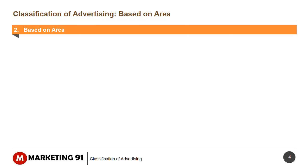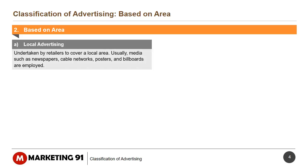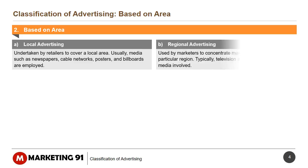The next classification is based on area, which is subdivided into four classifications. The first is local advertising, which is undertaken by retailers to cover a local area. Usually, media such as newspapers, cable networks, posters, and billboards are employed. Regional advertising is used by marketers to concentrate marketing efforts on a particular region. Typically, television and radio networks are the media involved.